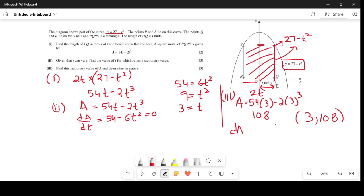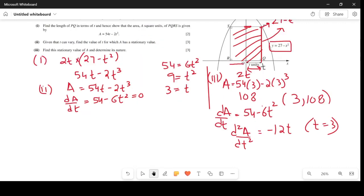dA/dt we already know is 54 minus 6t squared. The second derivative is going to be minus 12t. We replace t with 3, so we get minus 36. Since this is less than 0, this turning point is going to be a maximum.